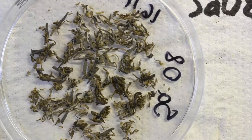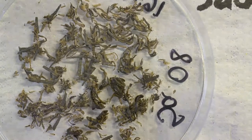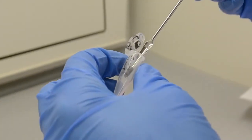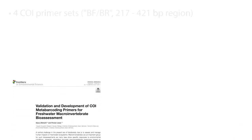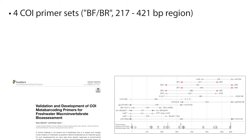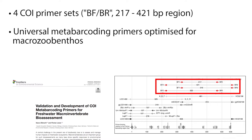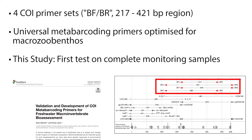Each sample was dried overnight to remove ethanol, then all specimens were homogenized and DNA extracted. We used four different primer combinations to amplify a short region of the CO1 barcode. The BF-BR primer sets were specifically developed to target freshwater macroinvertebrates, and while they showed good detection rates with mock communities, this study is the first time they were tested with complete macrozoobenthos kick samples.